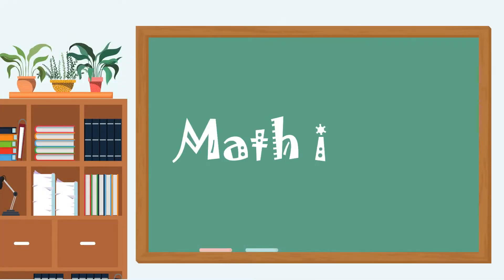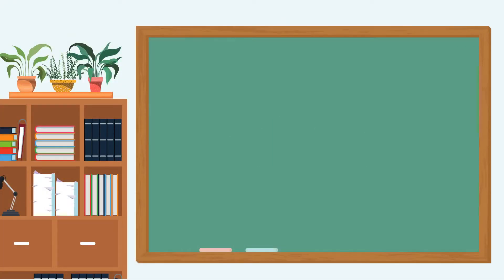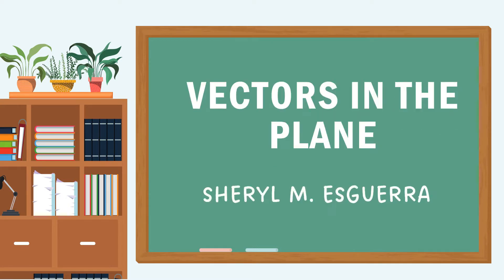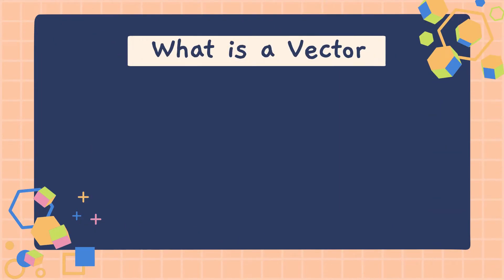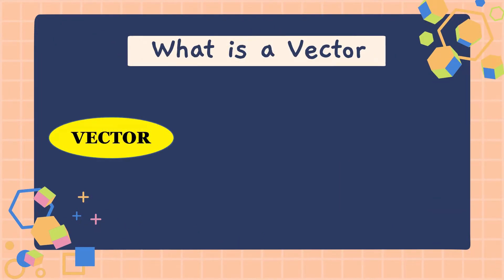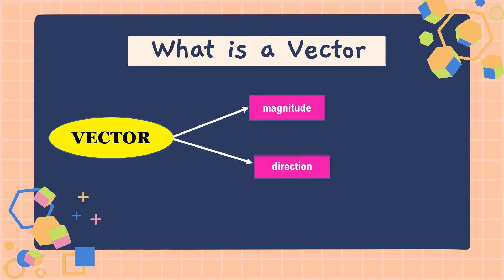Hello everyone, welcome to Math is Fun. Our lesson for today is about vectors in the plane. What is a vector? A vector is a quantity or phenomenon that has two independent properties: magnitude and direction. The term also denotes the mathematical or geometrical representation of such a quantity. Examples of vectors in nature are velocity, momentum, force, and electromagnetic field.